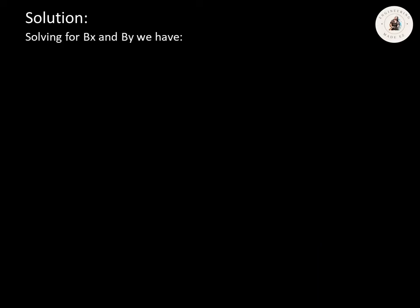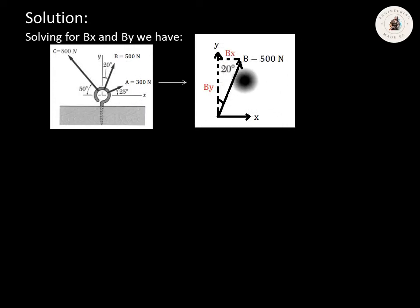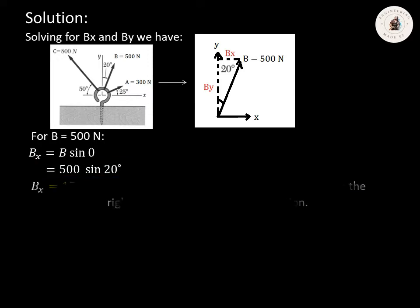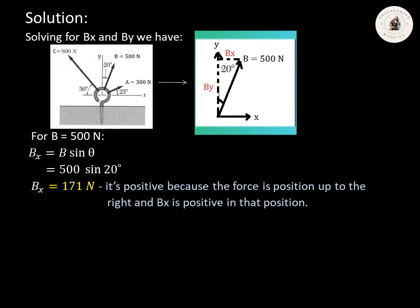Next, we're going to solve for BX and BY. We need to focus on force B which is equivalent to 500 Newton. Solving for BX: as you can see, BX is located on the opposite side in the given figure. So BX equals B multiplied by sine theta. B is 500 and theta is 20 degrees, so BX equals 500 multiplied by sine 20 degrees. Using your calculator, BX equals 171 Newton. The sign convention is positive because the force is positioned up to the right.